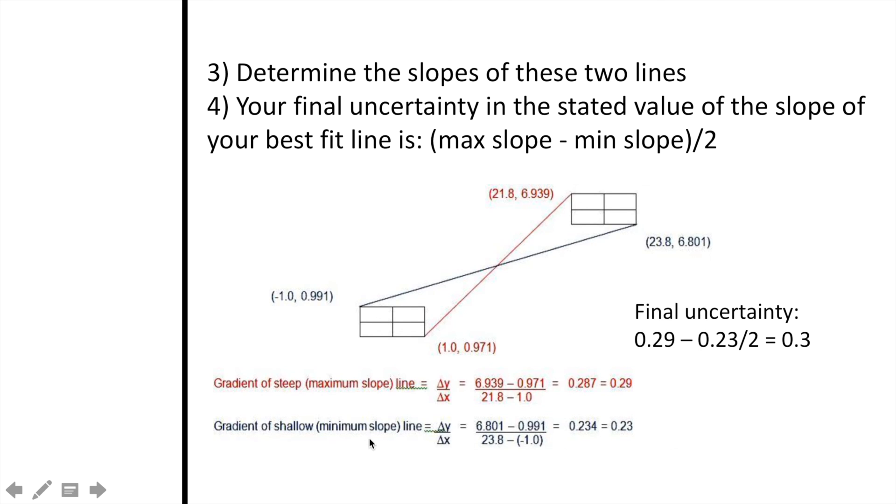When we do the same process for the minimum slope using the x- and y-values of the coordinates that are in black, we get a final slope of 0.234 or 0.23.